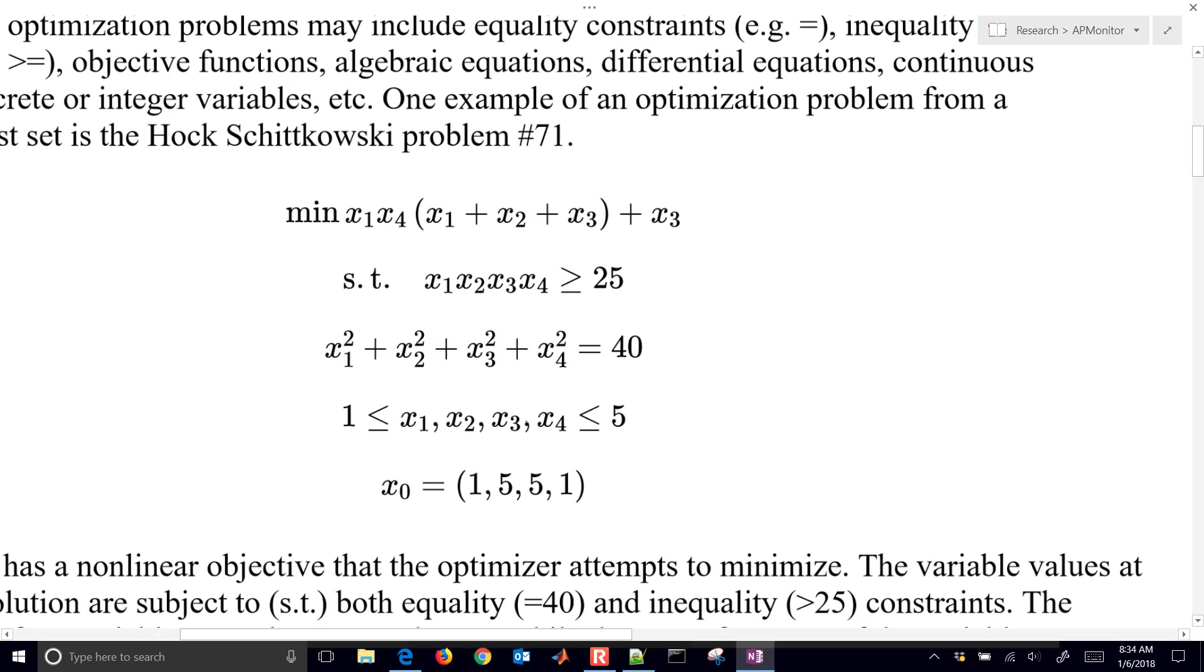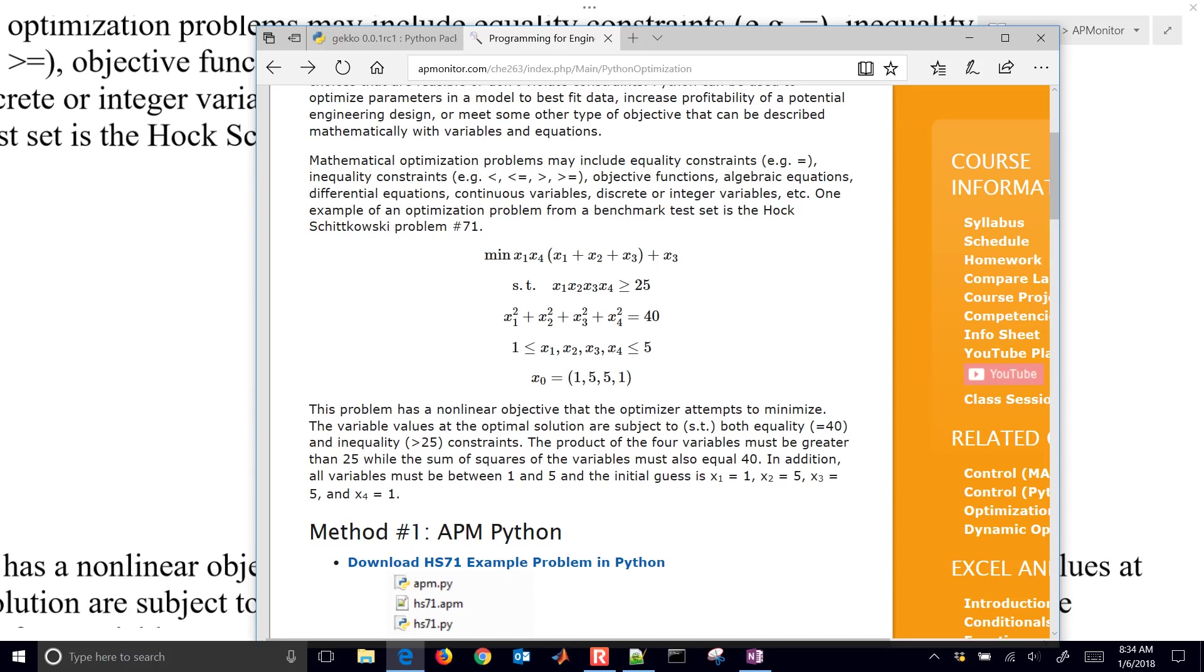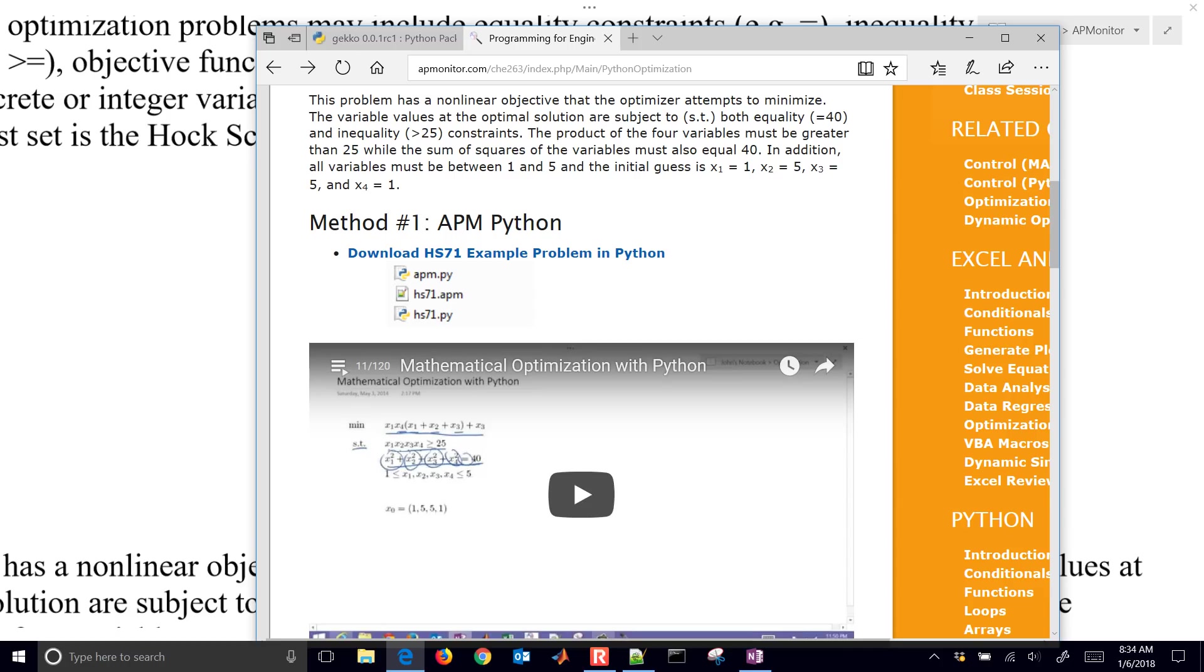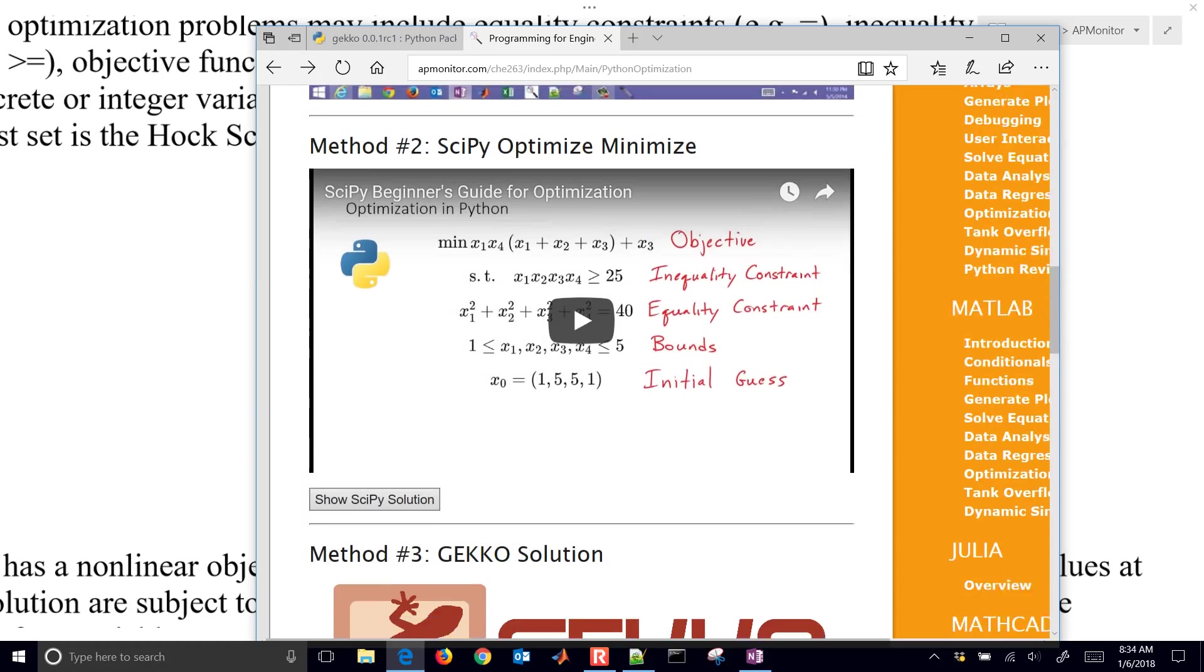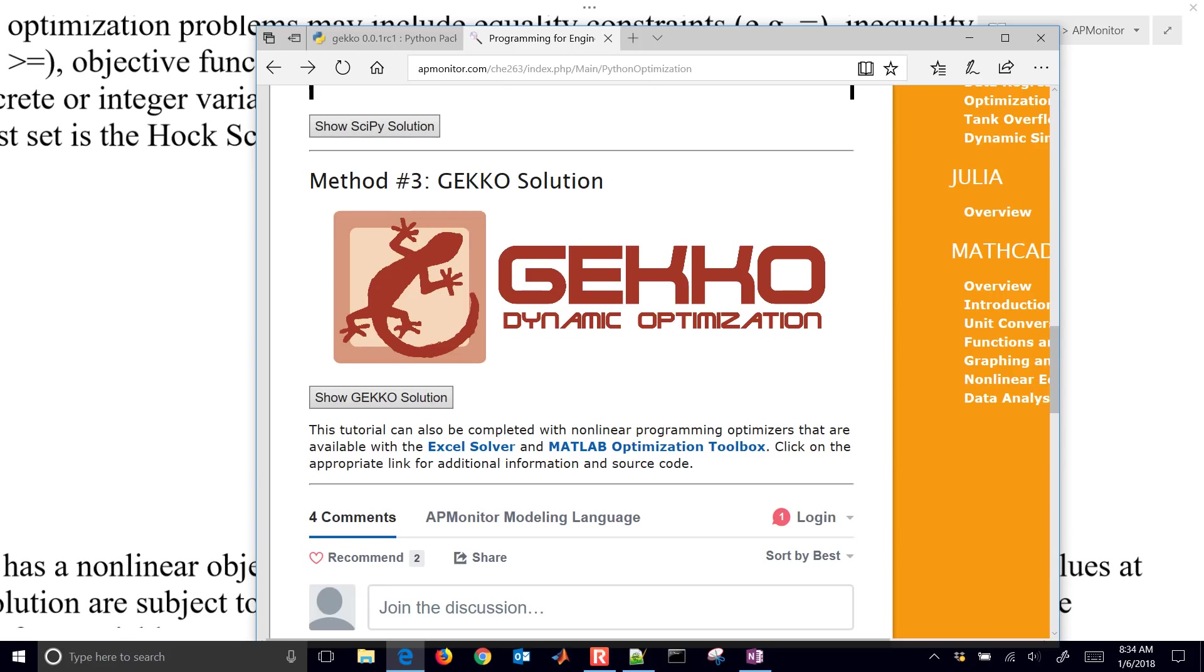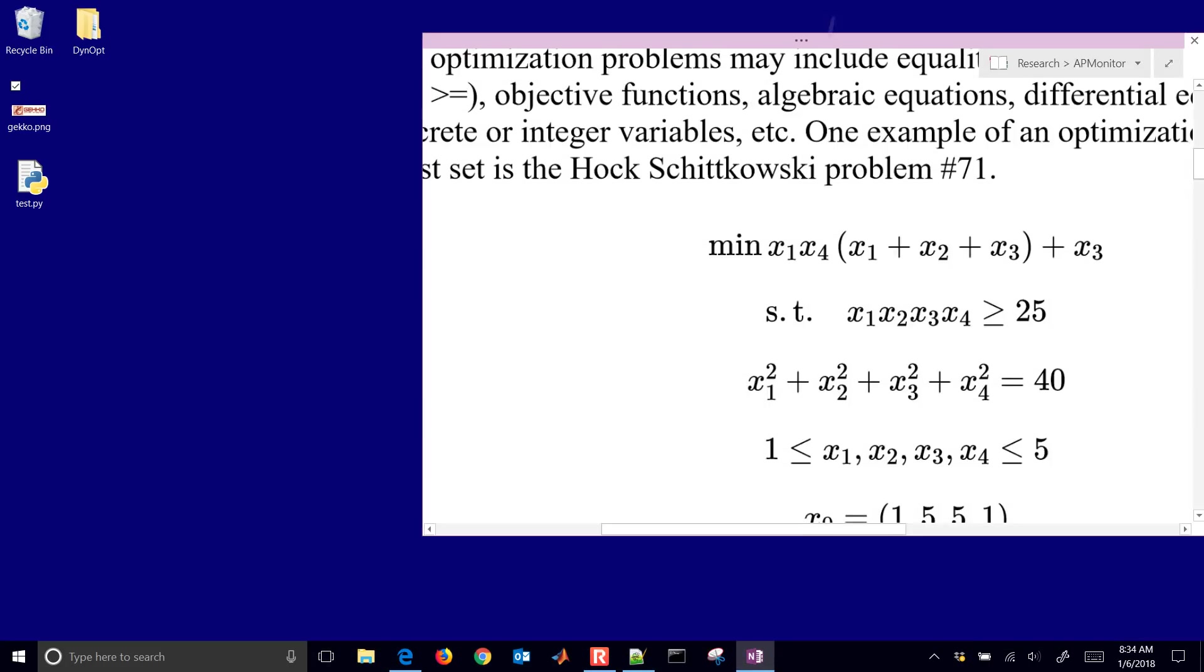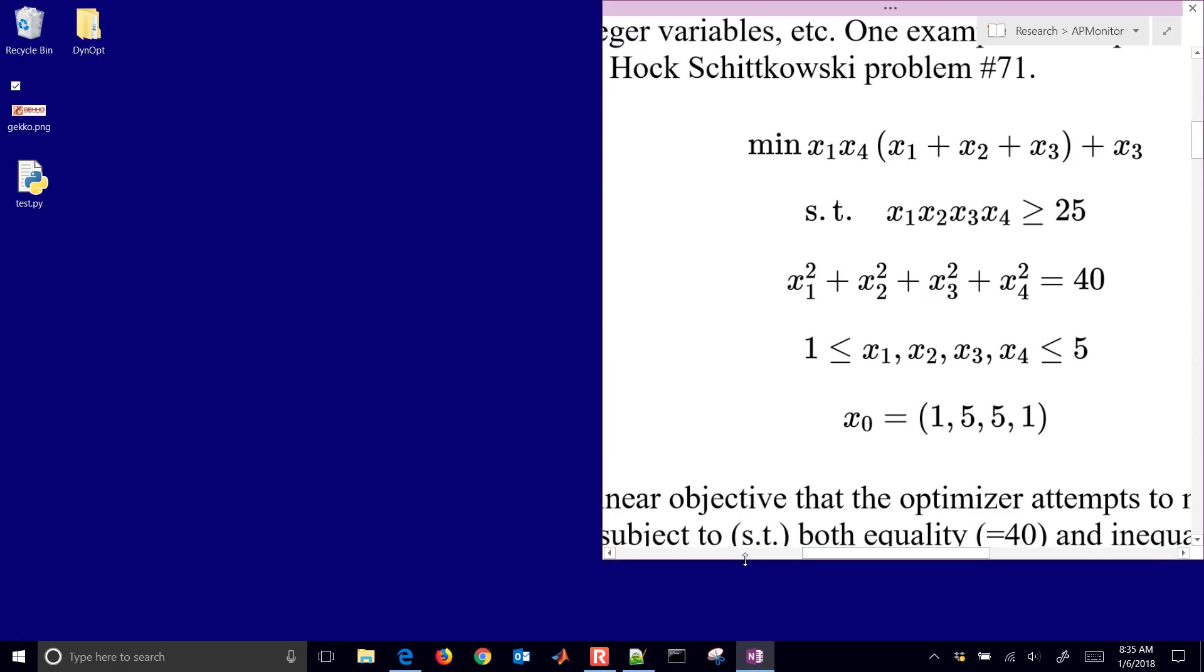I'll go back to the webpage where this is hosted. This problem is a common one for any solvers that are developed. And there is method number one with the traditional APMonitor Python. Here is SciPy Optimize Minimize. And you can see the solution there. And this third one is going to be the GECCO solution. So let's work through this and just set up our optimization problem with GECCO. I'll move this over to the side just so we can see it as we are working through this.